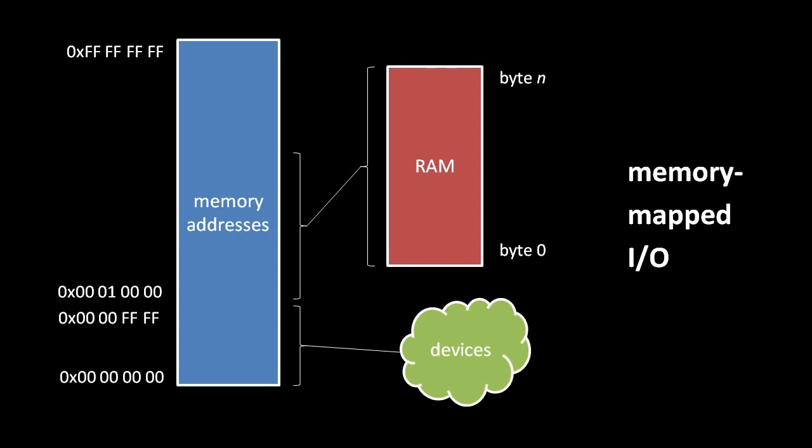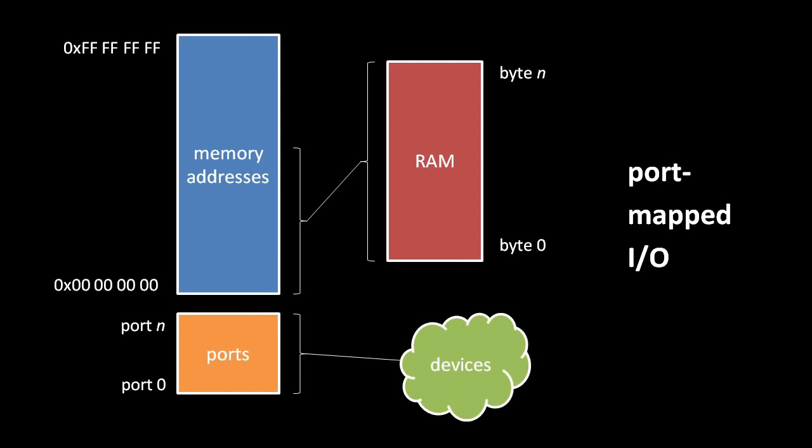In this example, any copy instruction reading or writing an address in the range 0 to FFFF reads or writes some device register rather than some byte of RAM. Other systems use port-mapped I/O, in which a separate address space — so-called ports — are used for device registers. In this arrangement, reading and writing device registers requires distinct input and output instructions. For example, an instruction for writing to a device register might look something like 'output register 2 to port 4498'.